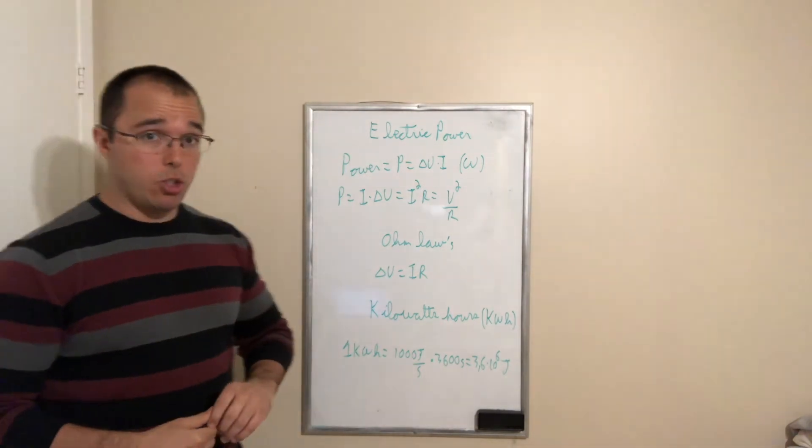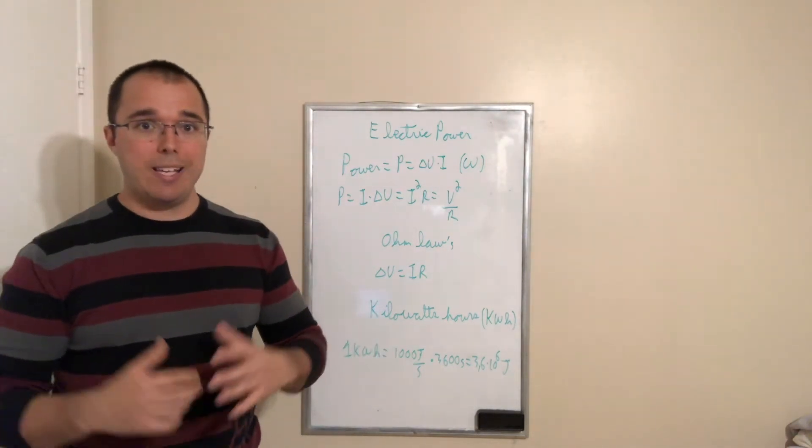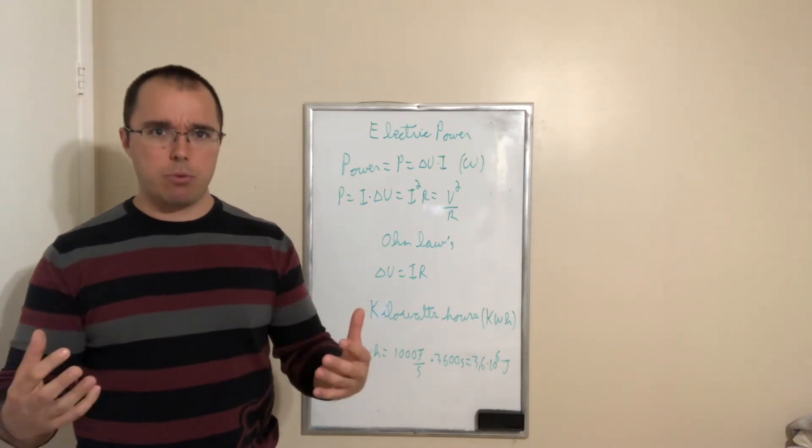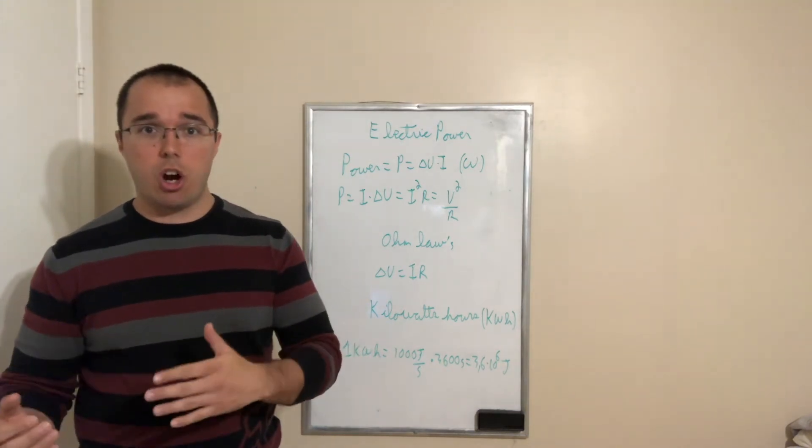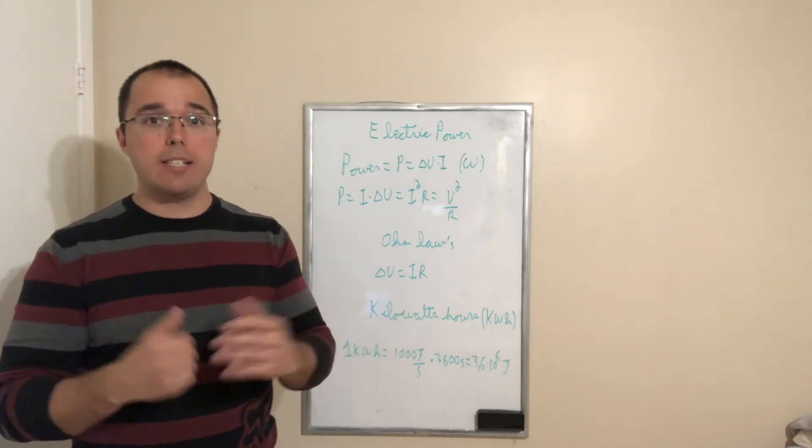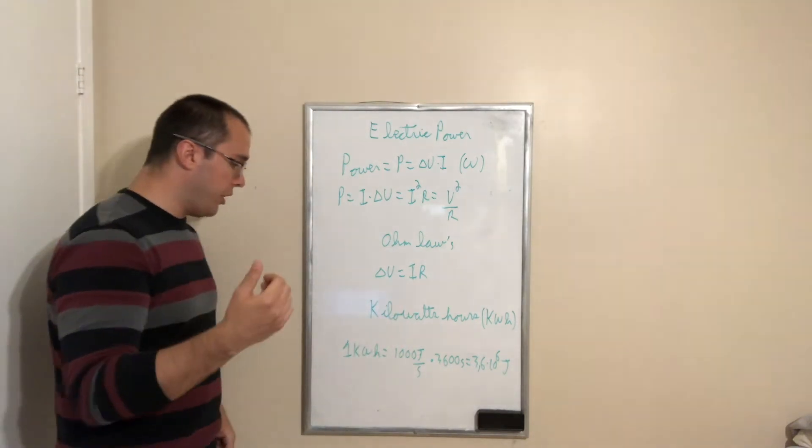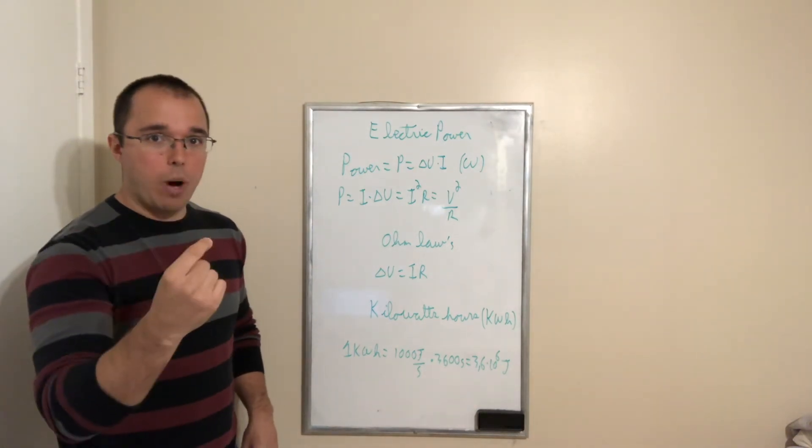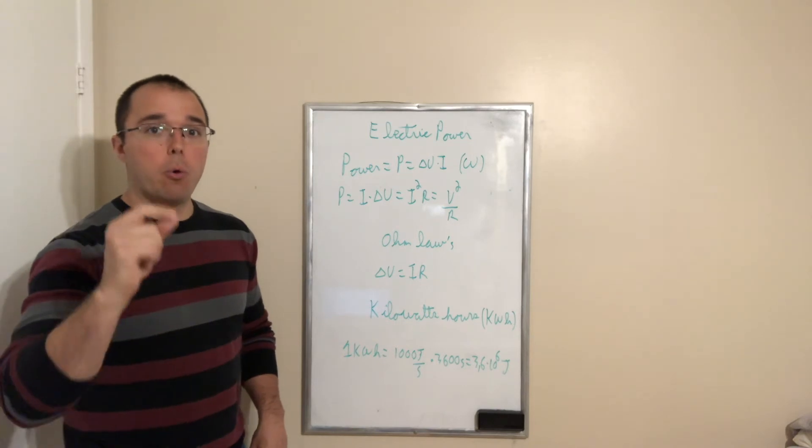All right. The last part we need to talk about before solving some examples is the concept of a kilowatt hour. Now you've probably seen on your electric bill that you are charged for the electricity consumed in kilowatt hour. So what is a kilowatt hour? Well, it's a measure of energy that is related to a usage of a thousand watts or one kilowatt for one hour.